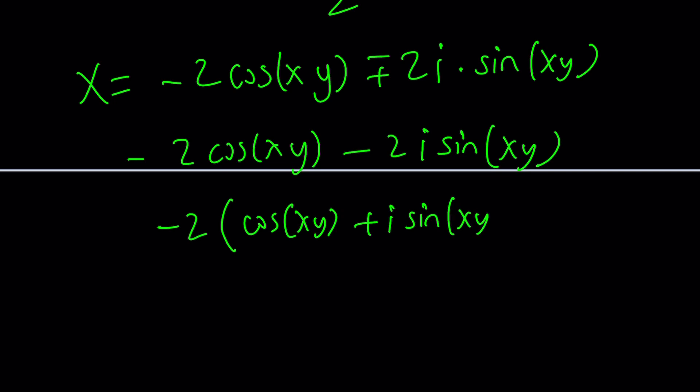That'll give me cosine of xy plus i sine of xy, which is actually a good form to have because this is the standard form, the trigonometric form. Cosine theta plus i sine theta, thanks to Euler, is e to the i theta. So this can be written as e to the i times xy. And this is supposed to equal x.